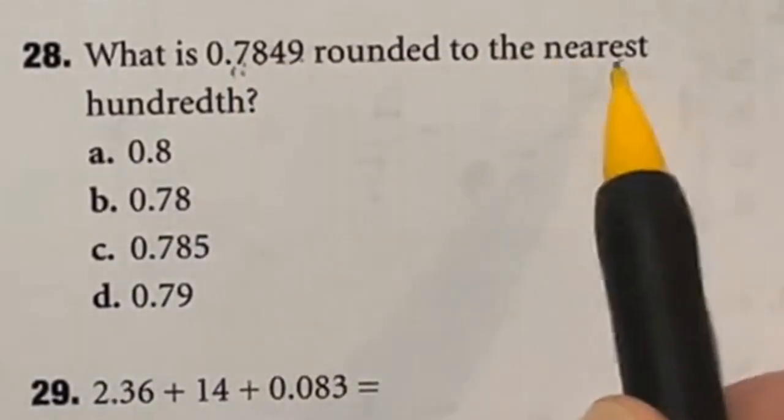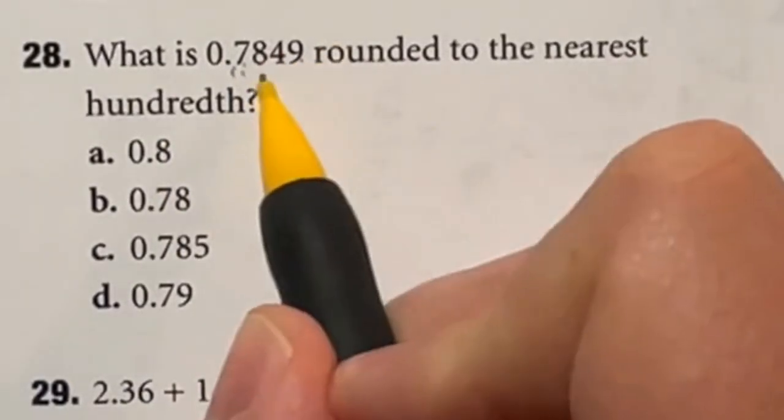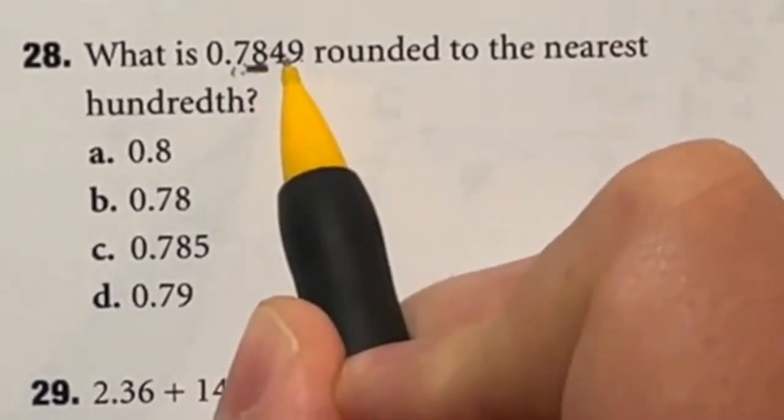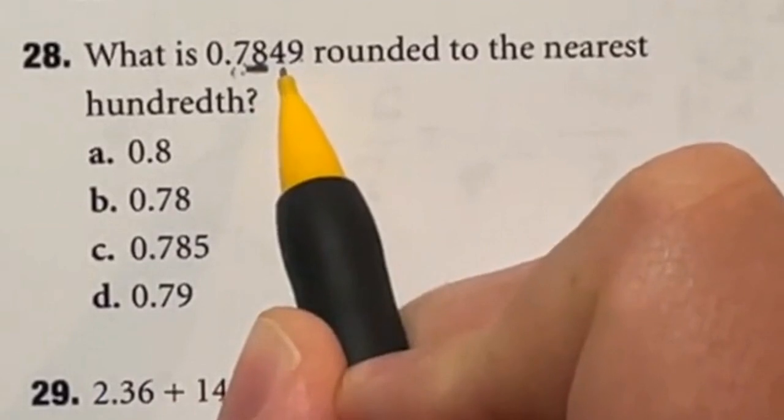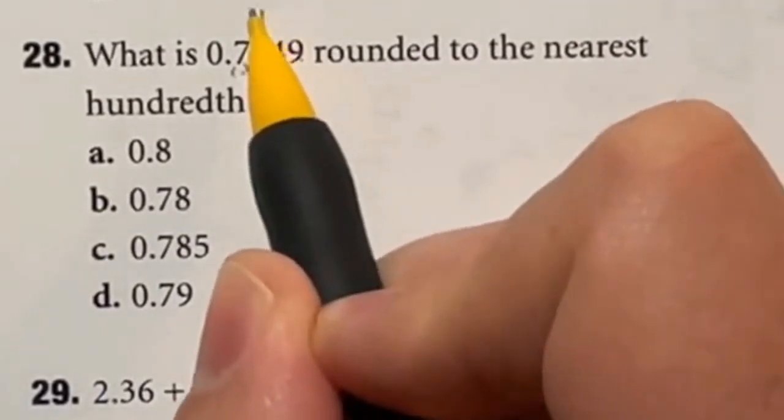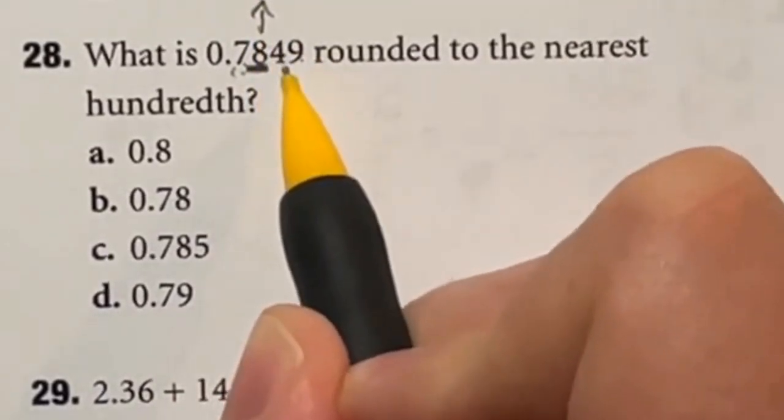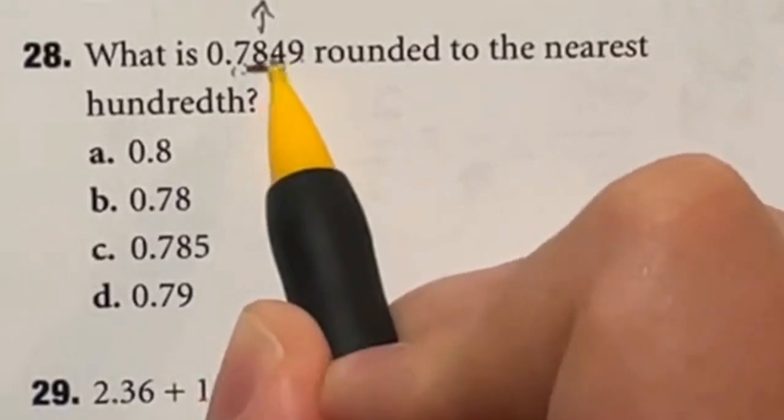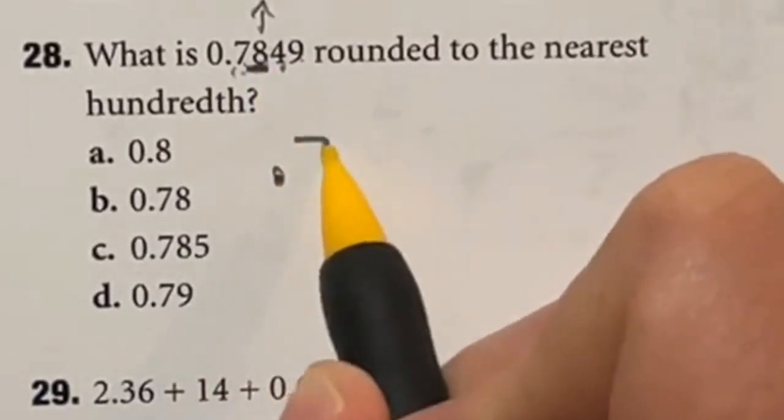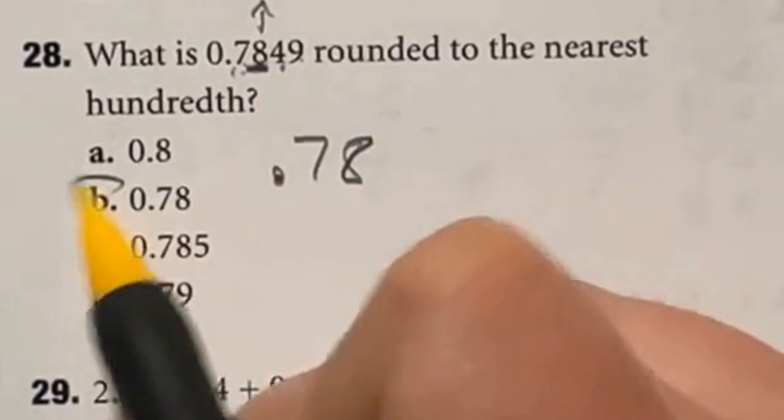So if we're rounding to the nearest hundredths, that would be this guy right here. So we check to see the next number. Is it five or larger? If it is, increase this guy by one. In this case, it's not five or larger, so that just stays the same. Our final answer should be 0.78, which is B.